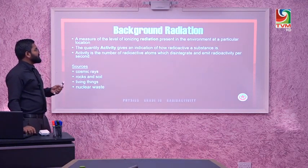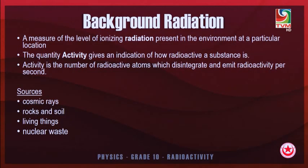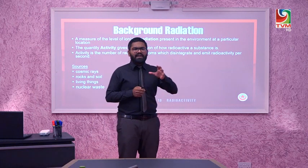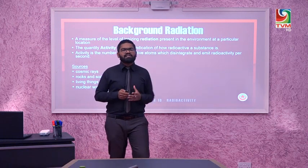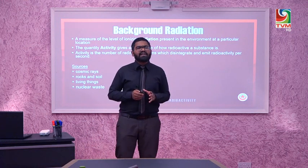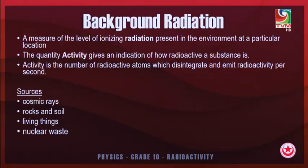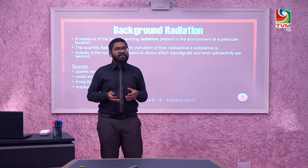There is something important to understand — background radiation. When we use a GM tube to take measurements of radioactivity, we will get some additional readings despite the radioactive source. That reading is called background radiation. It is a measure of the level of ionizing radiation present in the environment at a particular location, and it varies from place to place.